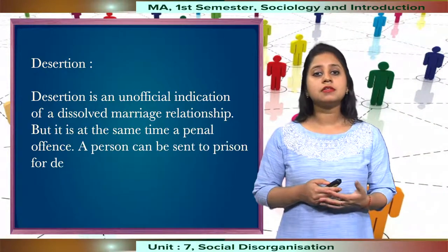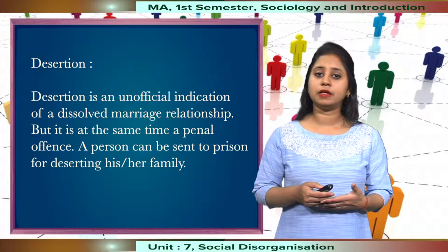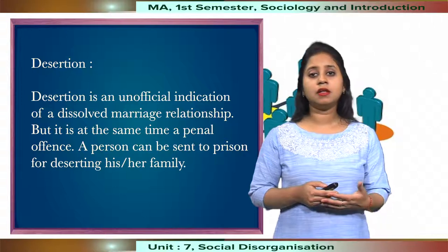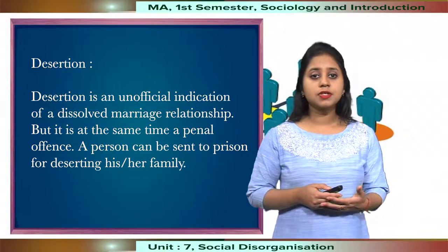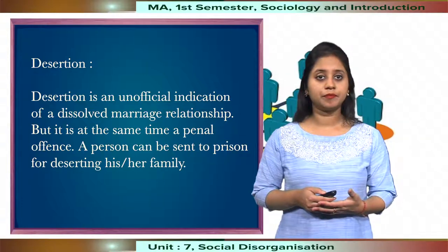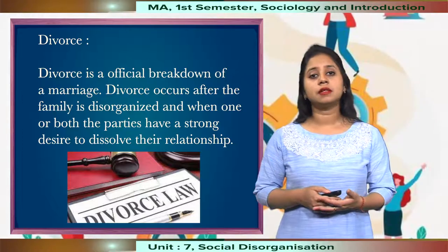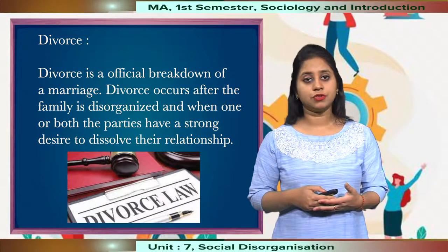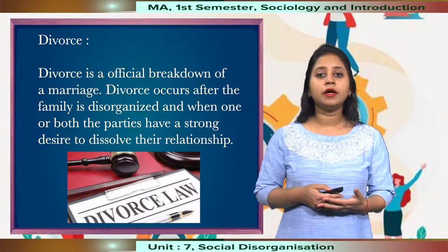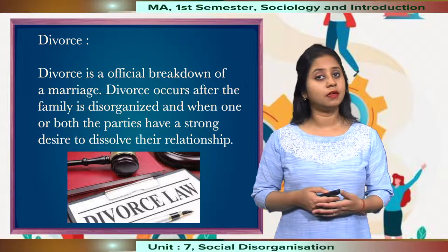Then we have desertion, which is an unofficial indication of a dissolved marriage relationship. A person can be sent to prison for deserting his or her family, as it is a penal offence. Finally, divorce is an official breakdown of a marriage. It occurs after the family is disorganised and when one or both parties have a strong desire to dissolve their relationship.